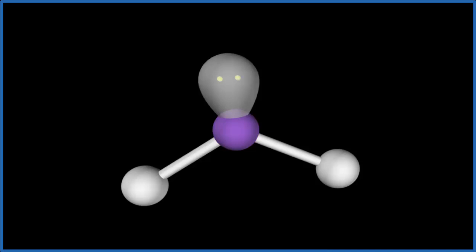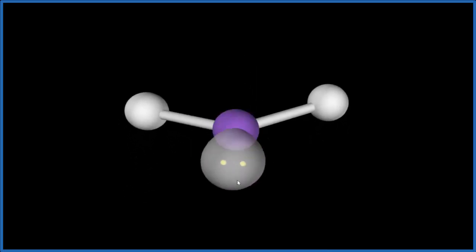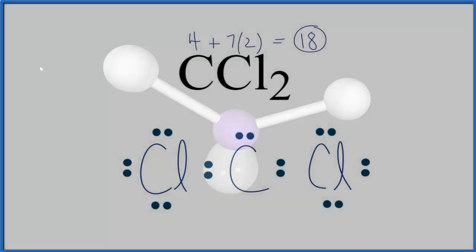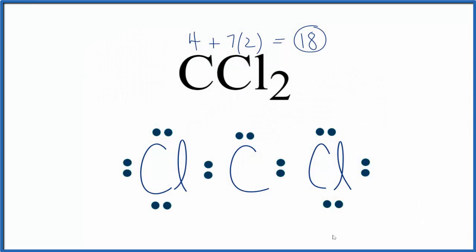If we talk about the electron geometry, that would be trigonal planar because we've taken into account the lone pair. To recap, this is the best Lewis structure for CCl2. It's never been isolated, but it does exist as an intermediate.